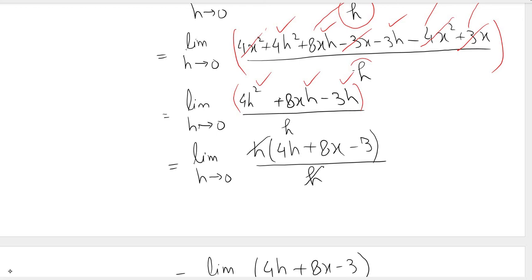So if I take h common, I am left with 4h, 8x, and minus 3. And this h cancels out with the h in the denominator.